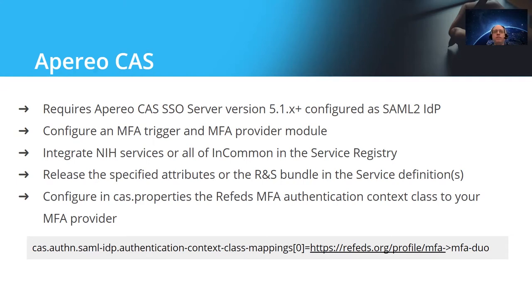You can configure MFA like you would for anything else with Duo and triggering as you want. The only configuration you might need, once you consider all these other things, is just a single CAS property. That CAS property — the context class mappings — maps the RefEds MFA profile to a particular MFA provider that you've set up in CAS, which in this case is the generic default: mfa-duo. So when the SAML 2 authentication request comes in and CAS sees the RefEds MFA context, it will take you to Duo and assert that Duo has been done. This is the format for 6.3 or newer — do check the docs for your CAS server version as configuration may change slightly.